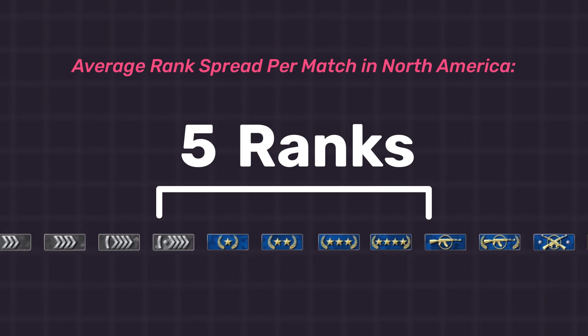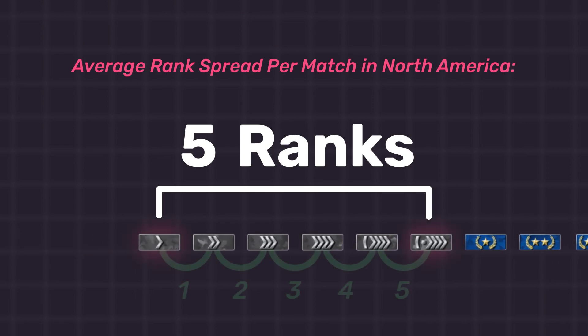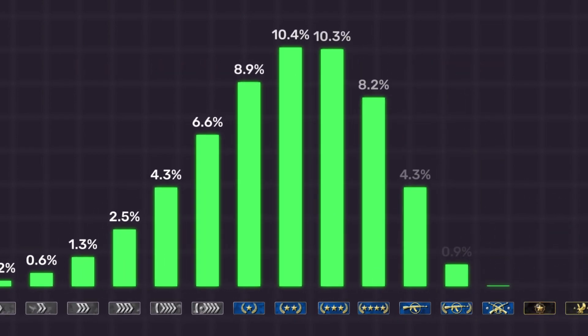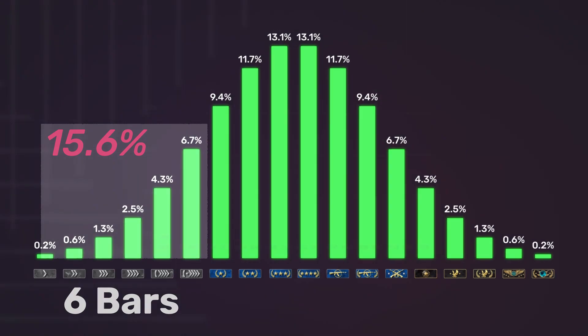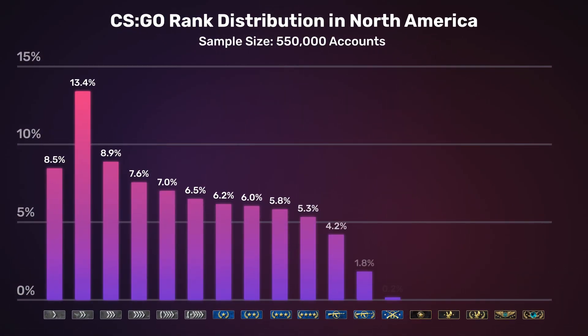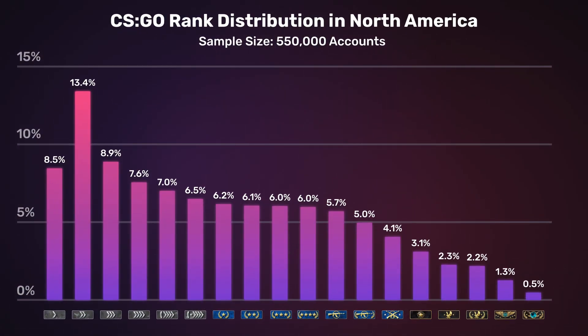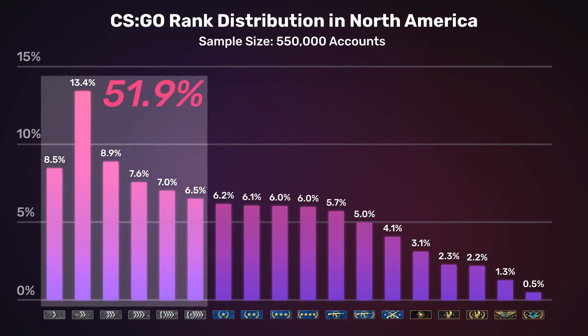Similarly, you would expect a game with a Silver 1 to tend to have the highest rank in the lobby be Silver Elite Master. In this typical Silver 1 to SEM spread, if we look at the normal distribution, this means that all of the players competing with each other are within the bottom 6 bars of the histogram. This accounts for the lowest 15.6% of players in the game for the ideal case of normally distributed ranks. However, with the spread the way it is in the current NA rank distribution, this means that the game instead could pull from anyone within the bottom 51.9% of the playerbase.